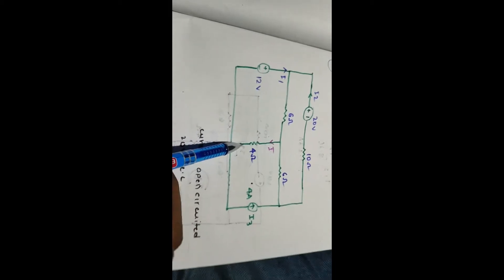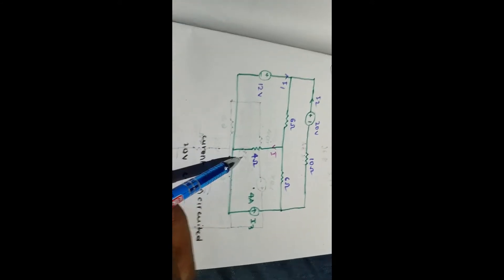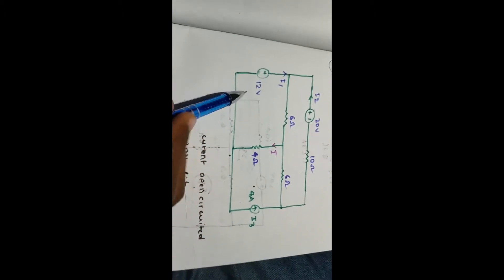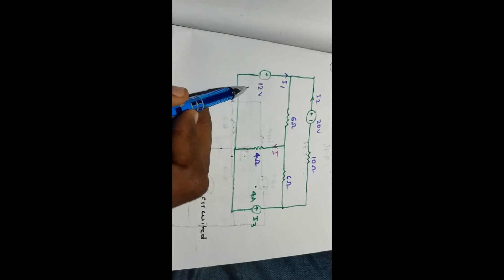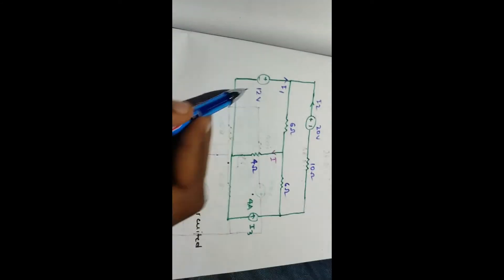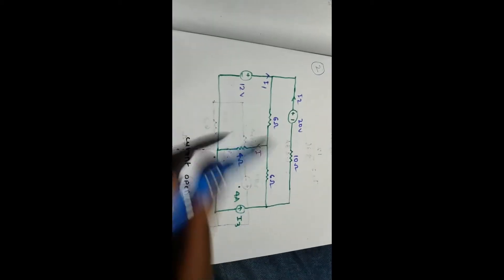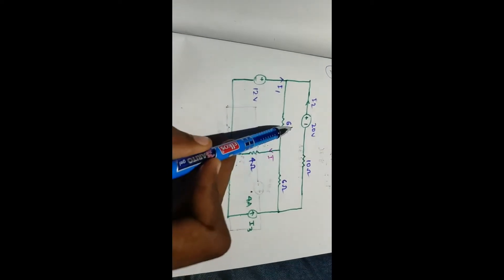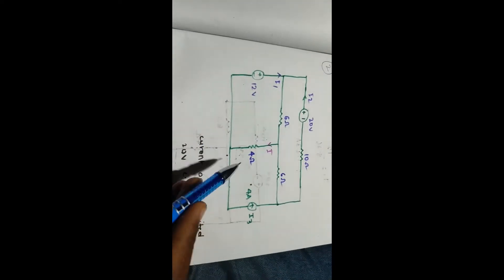In this problem we have a 4 ohm resistor and we need to find the current through it using the Superposition Theorem. Here we have three independent sources. According to the Superposition Theorem, we consider one source at a time while deactivating the others. For example, when we consider 12 volts, we deactivate 20 volts and 4 amps, then redraw the circuit.